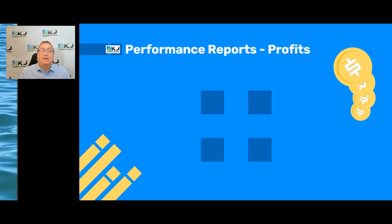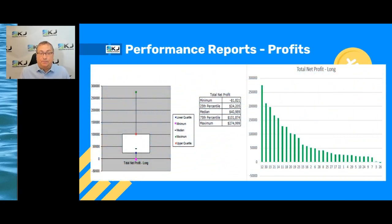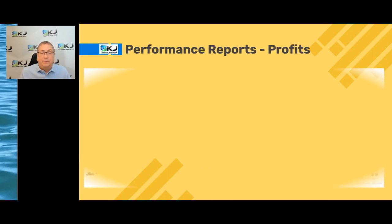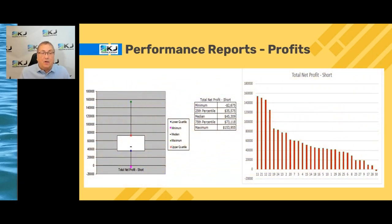If you look at just the long trades, there's some variation across strategies — a pretty big chunk ranging from about $25,000 to $100,000. For short trades, we see a similar pattern, although it's a little tighter in distribution and generally a little lower than the long trades.